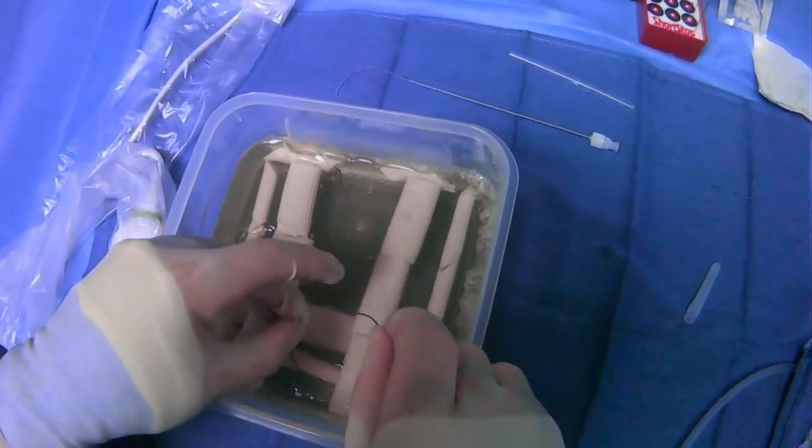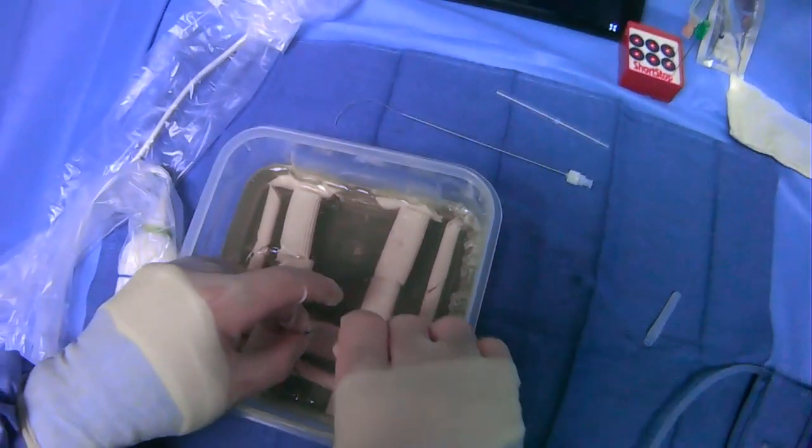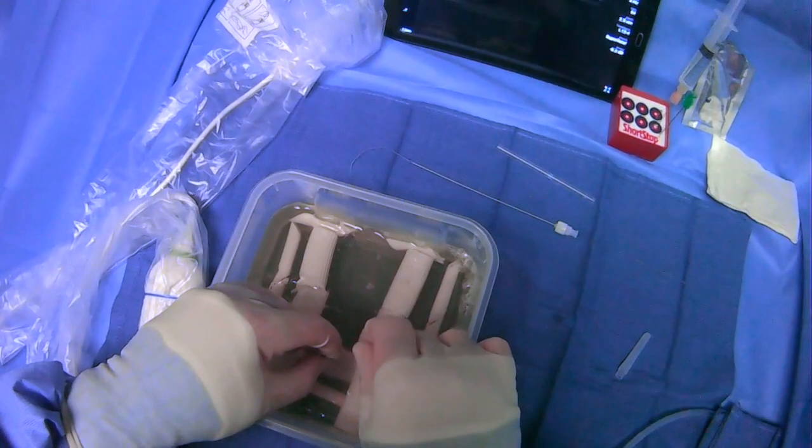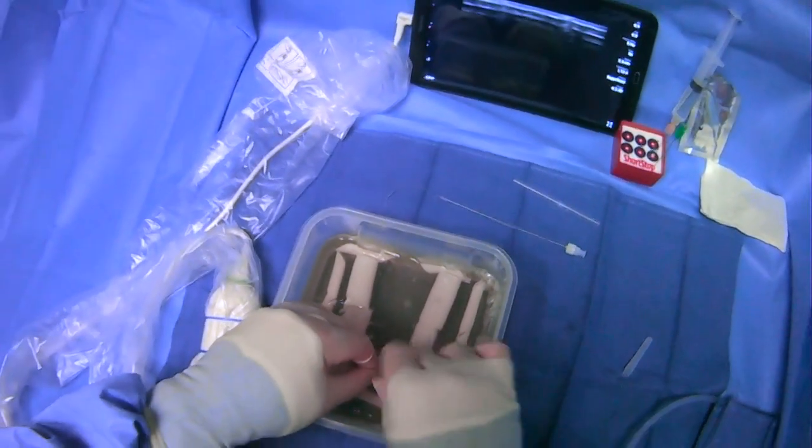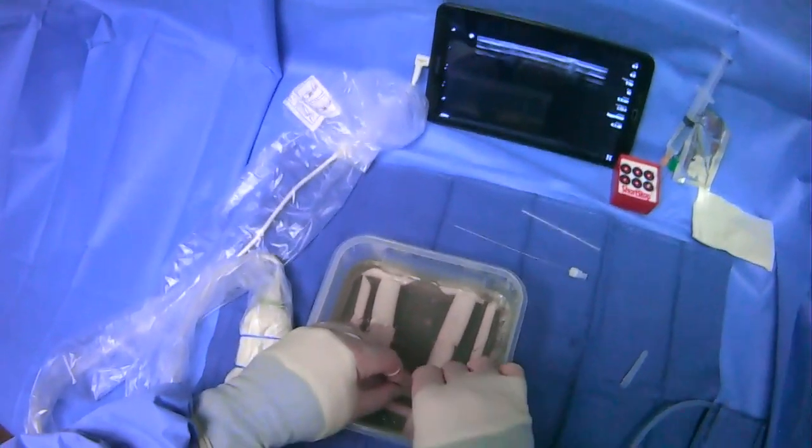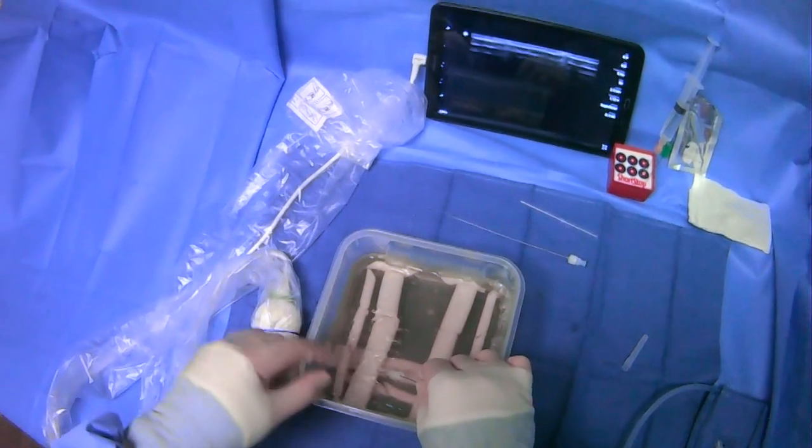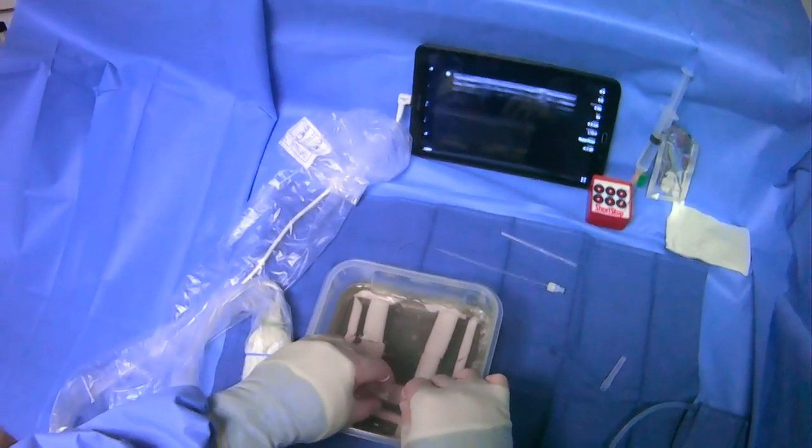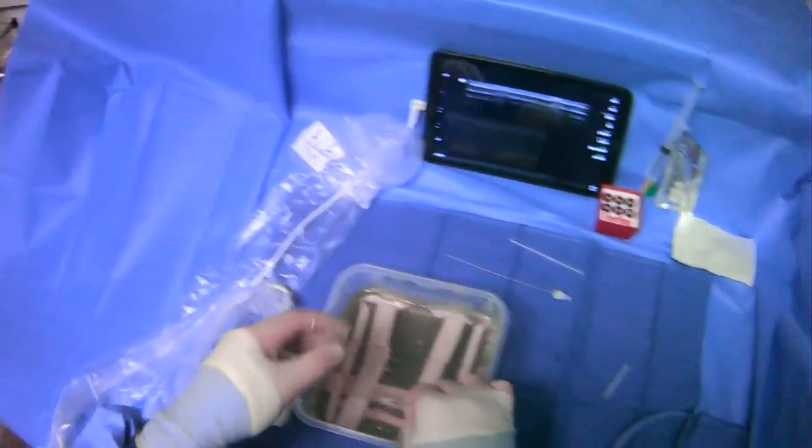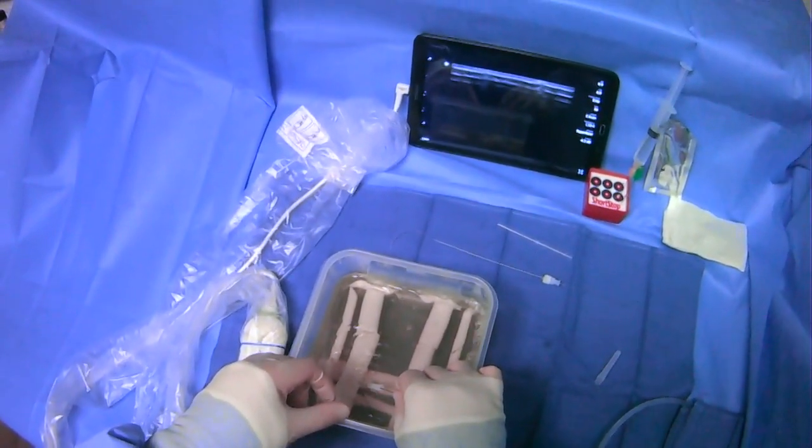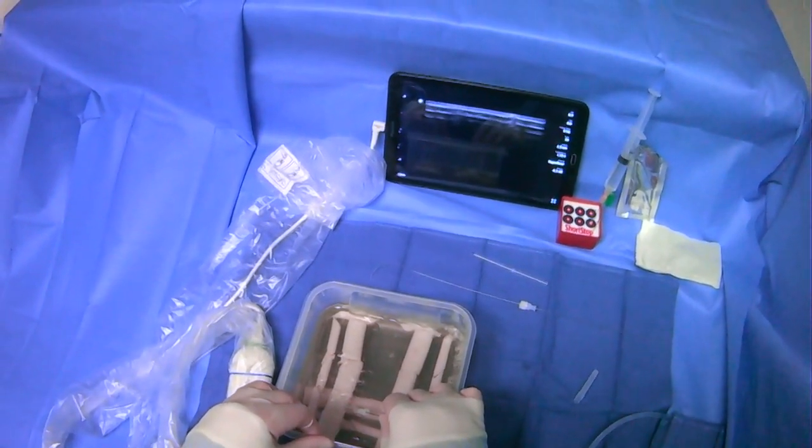And now we can put the amplats wire in. There we go. And we'll advance this wire. And now we have secured access. We can take out this micro catheter over the wire and put anything else in and get on with our case. And that is how you gain internal jugular vein access.